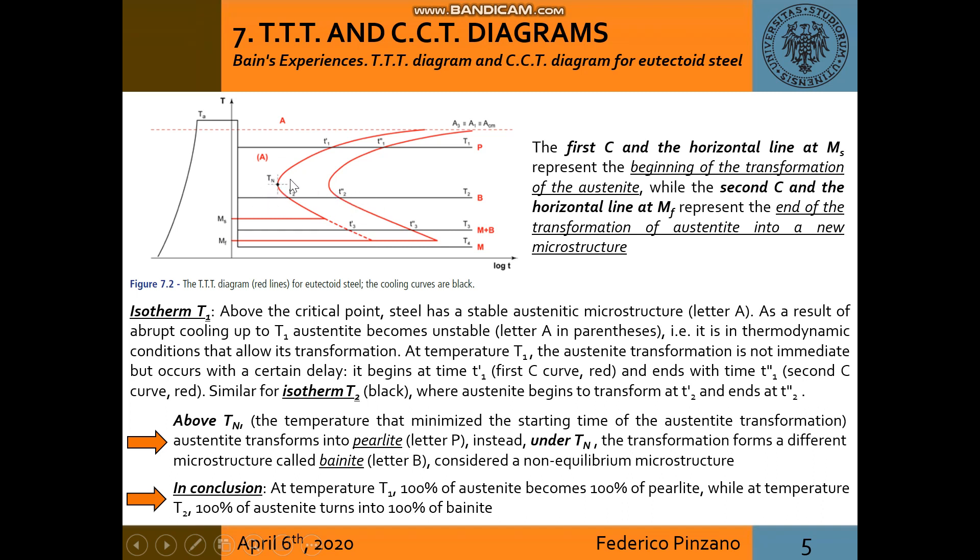Above TN, austenite transforms into pearlite. Instead, under TN, the transformation forms a different microstructure called bainite, considered a non-equilibrium microstructure.